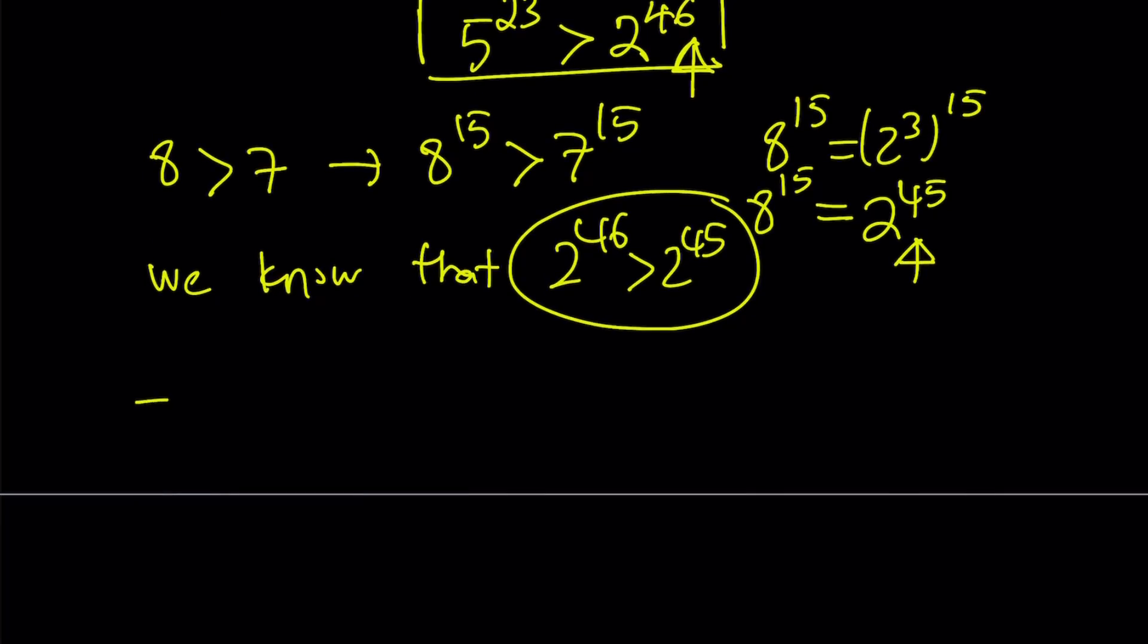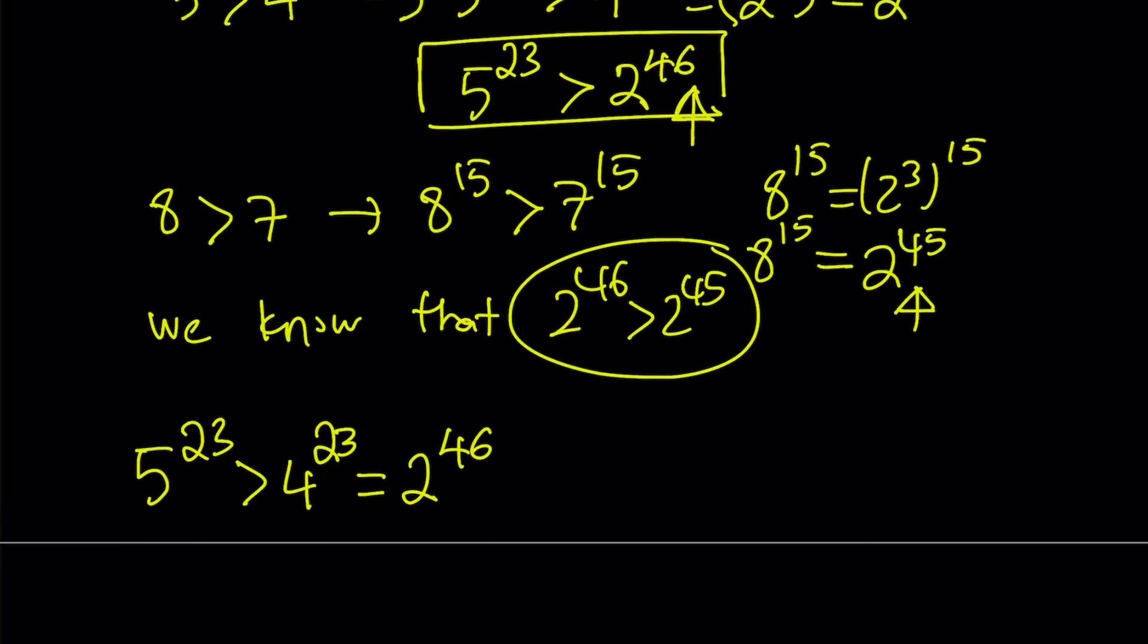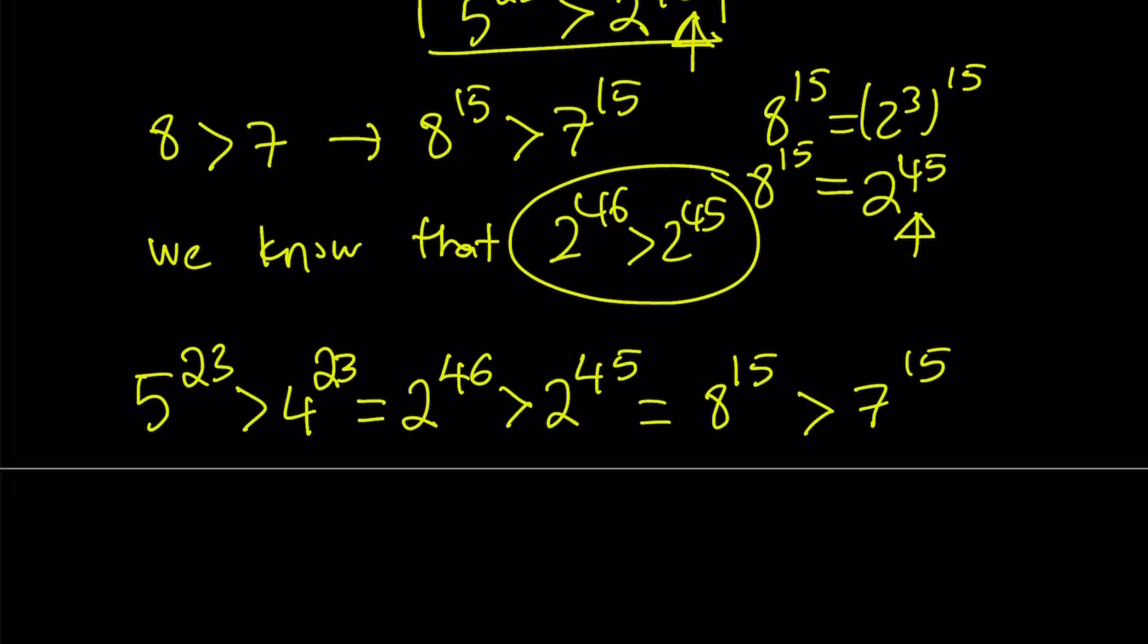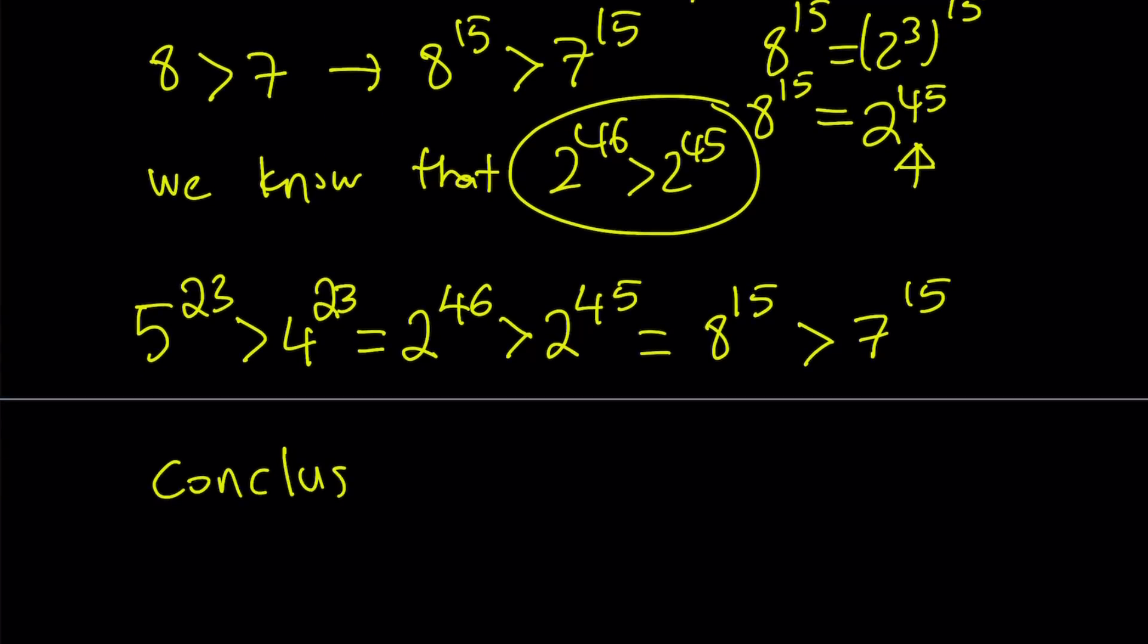Now we have 5 to the power 23 is greater than 4 to the power 23. As you know, 4 to the power 23 can be written as 2 to the power 46. And 2 to the power 46 is clearly greater than 2 to the power 45, which is the same thing as 8 to the power 15. And obviously, 8 to the power 15 is greater than 7 to the power 15.